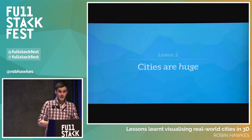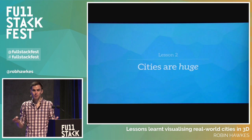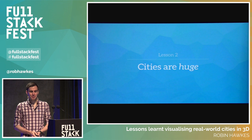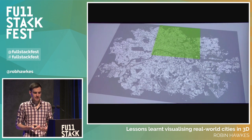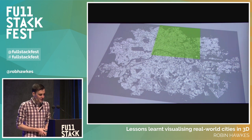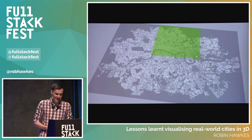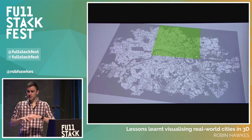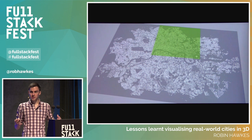Lesson two: cities are huge. It turns out cities are far bigger than I expected. I attempted to initially render the entirety of London — it's a noble goal. It turned out to be a vast area; I mean, I live in London, and it's got a huge number of buildings — we're talking many millions of buildings. The screenshot here isn't actually all of the London boroughs, which is what I wanted to originally visualize, and I actually stopped at this point because I realized what an impossible task this was.